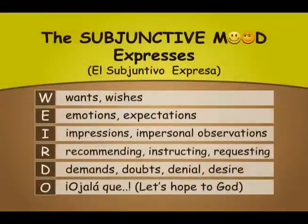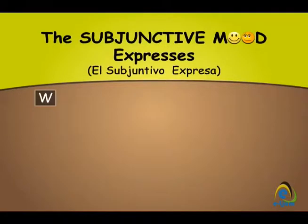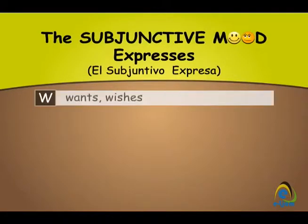As we saw before, the subjunctive is kind of a weirdo tense, and we're going to now take the W from the weirdo category. The subjunctive is used after verbs of wanting or wishing.